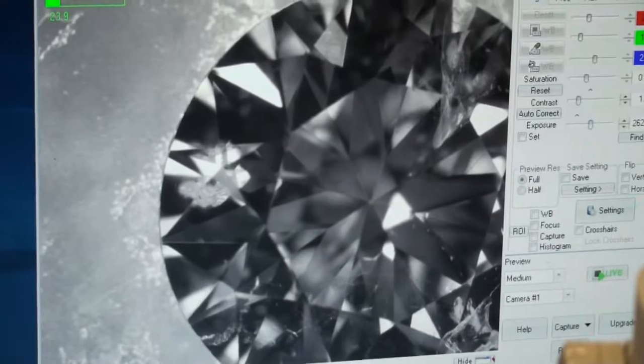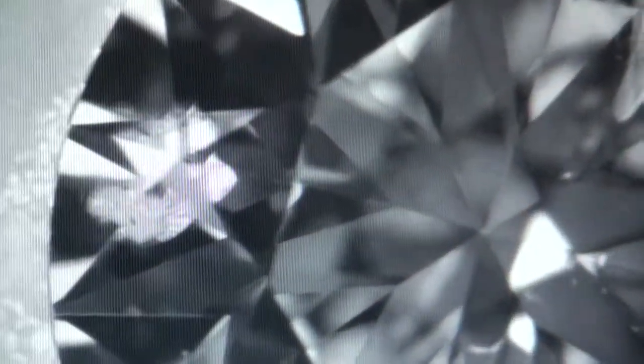This is an example of an SI2 inclusion. I'm just going to zoom into it, and you can see the diamond is definitely included. Right over here. There's a few other areas of inclusions as well, but usually when you shine light behind the diamond, if you can't see the inclusion normally, you're going to see it there.